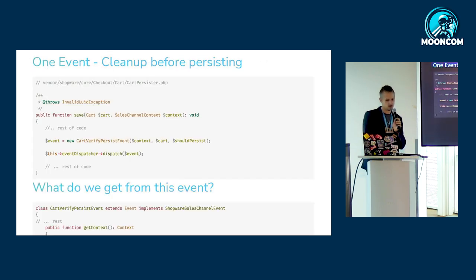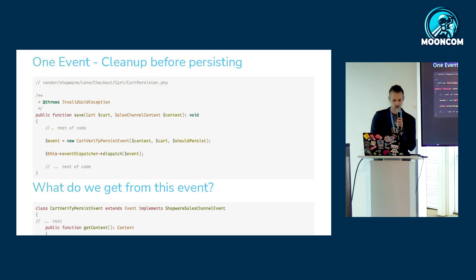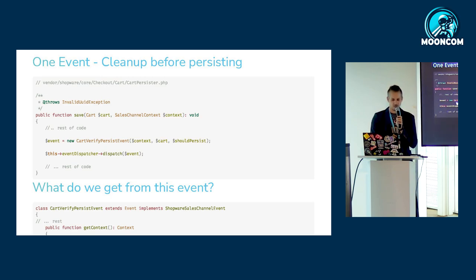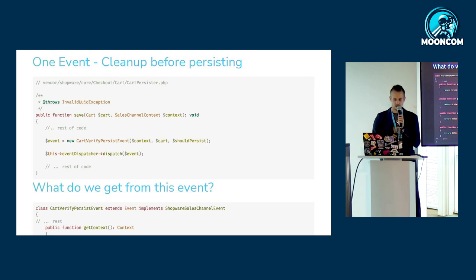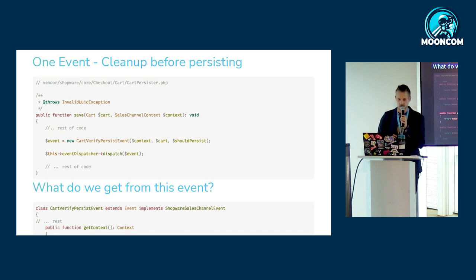We have one event where we can hook in for cleaning up before the cart object gets persisted. This is from the Shopware core — the cart persister — and there is one specific method: the save method. This is where Shopware saves the cart object into the database. There we have one event, the cart verify persist event, which gets dispatched before Shopware stores it to the database. From this event we can get the context, the sales channel context, the cart, and information on whether the cart object should get persisted or not.